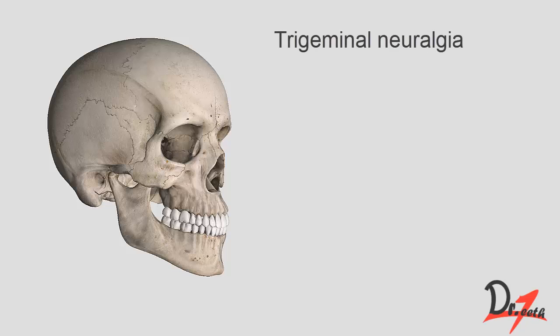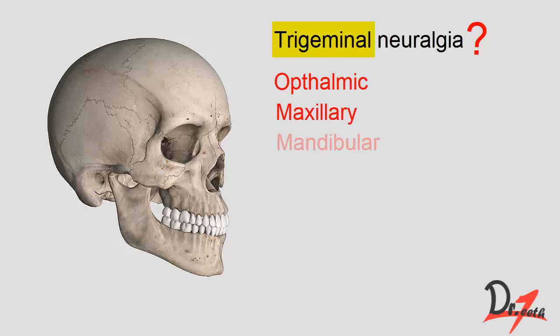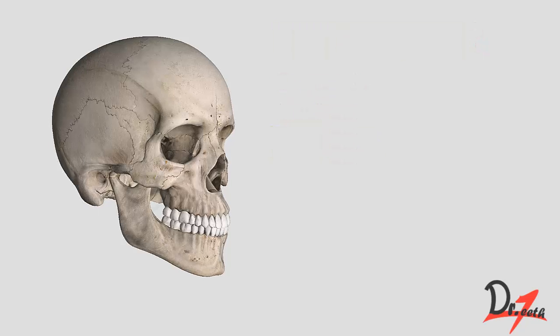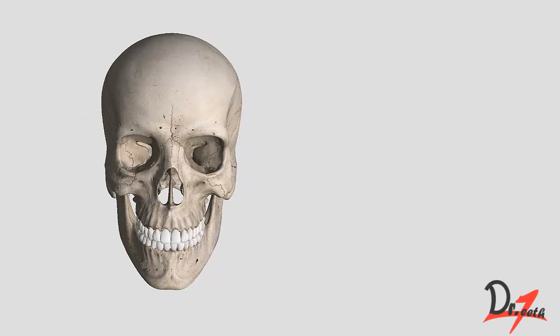Today we are going to study about trigeminal neuralgia. Trigeminal is the name of a nerve, called trigeminal because it has three divisions: ophthalmic, maxillary, and mandibular. Neuralgia means pain, so trigeminal neuralgia is a pain occurring in any of the three divisions of the trigeminal nerve. The mandibular division is more commonly affected.